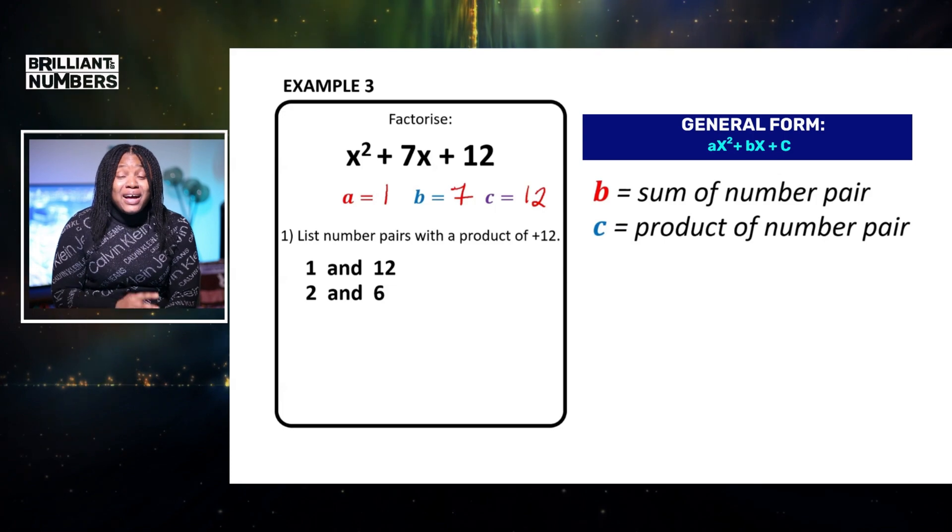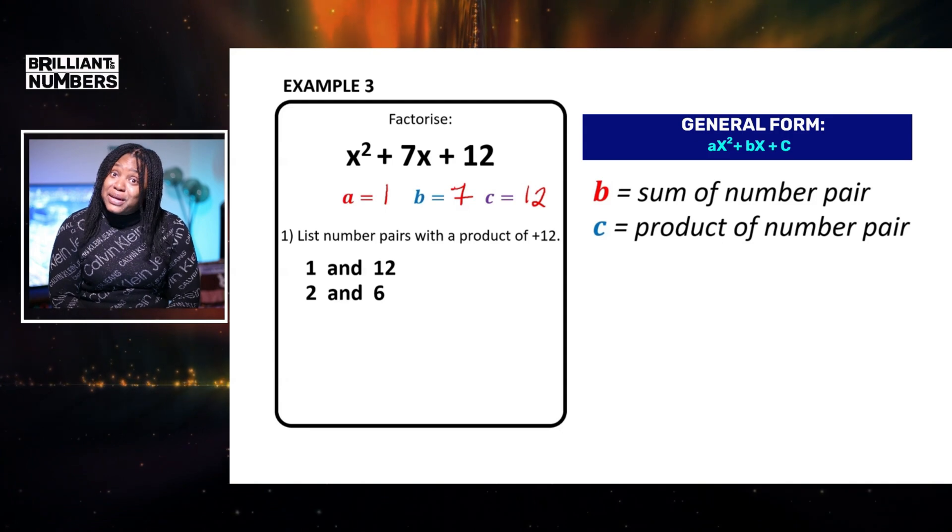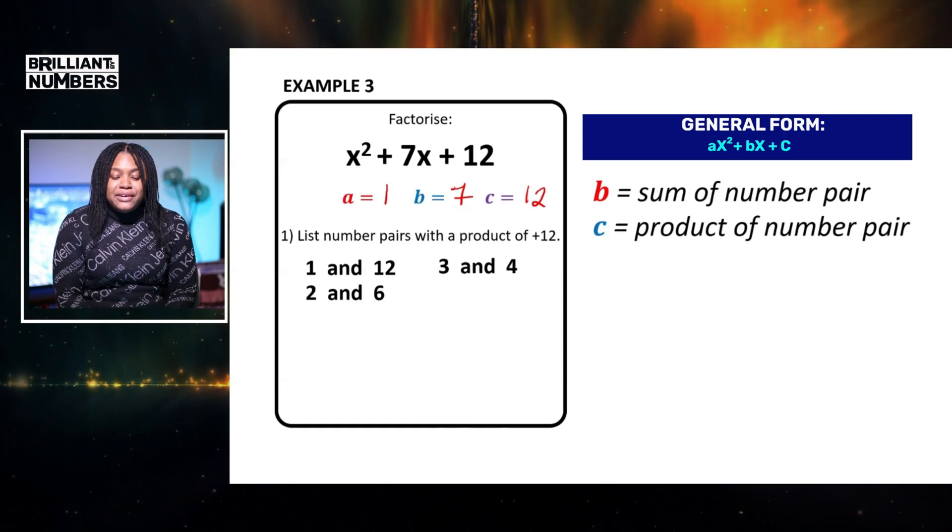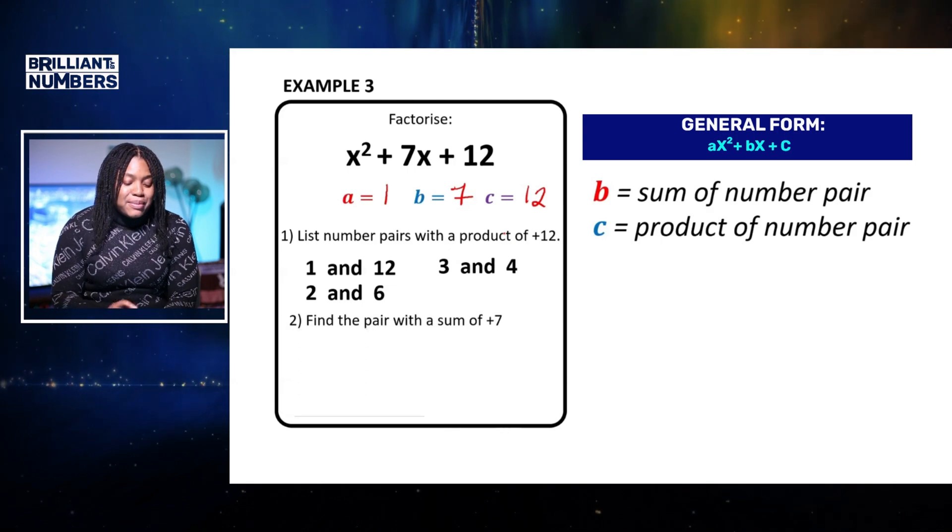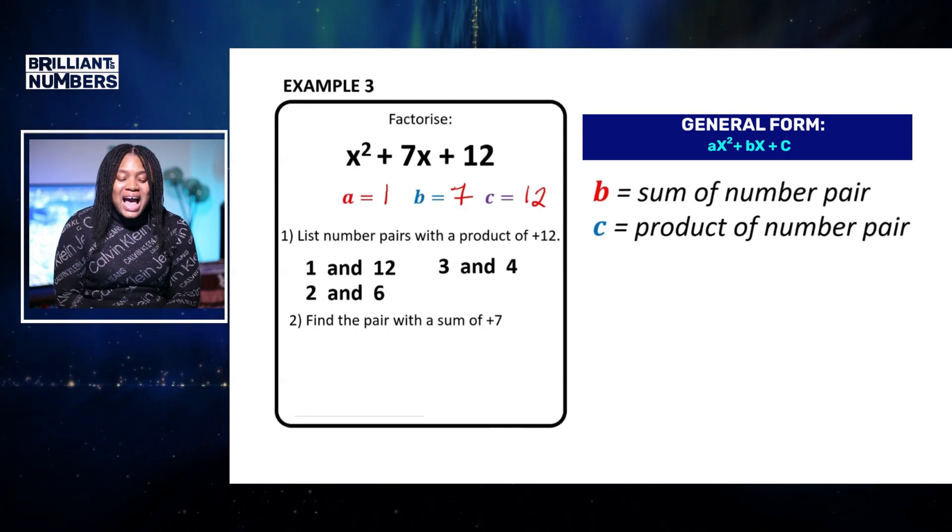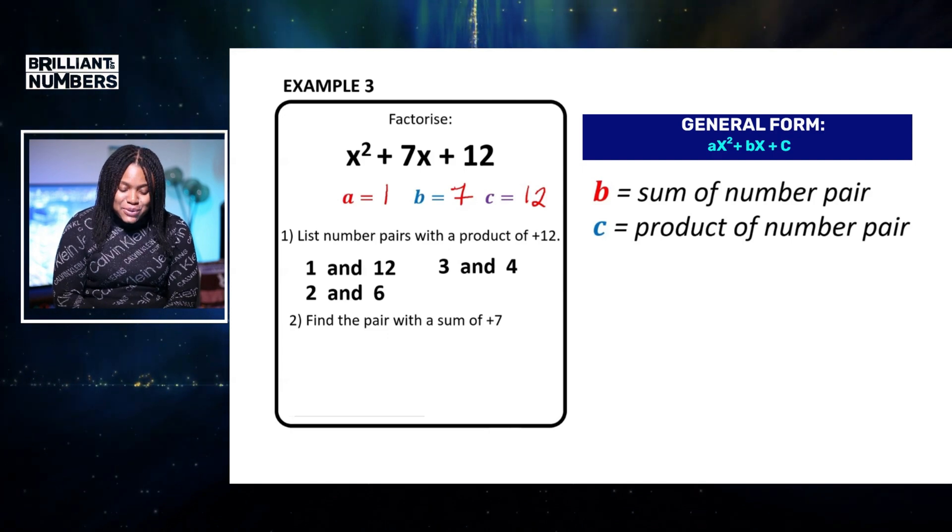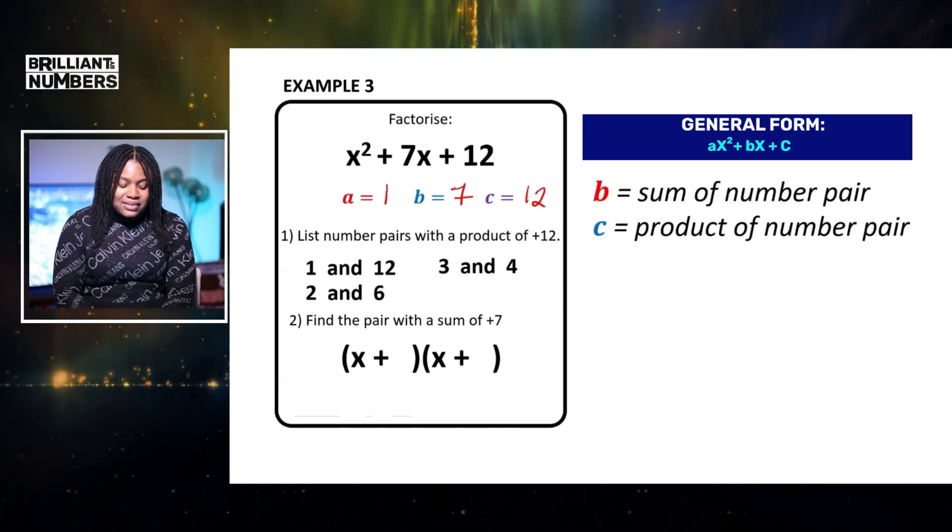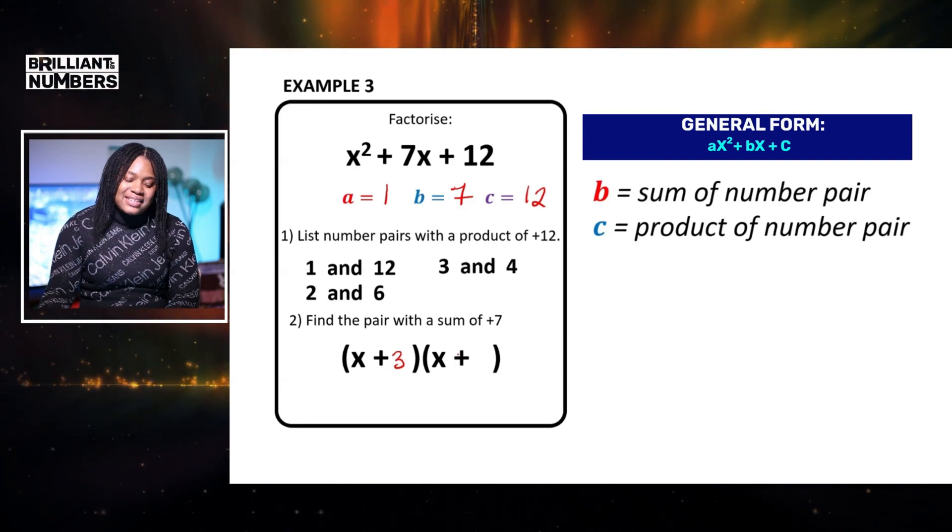So this time we can see we have not one number pair, not two number pairs. But let's see. Will it be 3? Will it be 4? Let's see. So we could also have 3 and 4. Yes, we have now found our pair because remember we want them to be a sum of 7 and 3 add 4 is equal to 7 and multiply together gives us 12. So we found our pair. We just need to put them into our brackets. So the answer is x add 3 and x add 4.